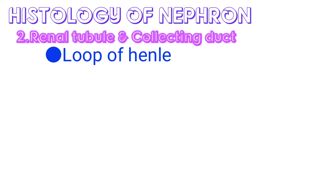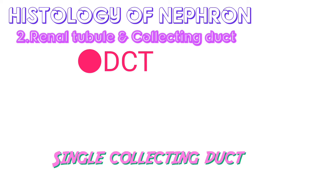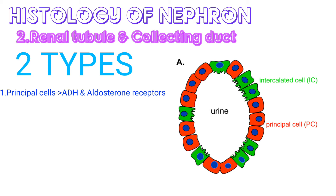The distal portion of the renal tubule is called the distal convoluted tubule, or DCT. Short connecting tubules link the DCT of several nephrons to a single collecting duct. The last part of the DCT and the collecting duct consist of two different types of cells. The majority are principal cells, which have receptors for ADH (anti-diuretic hormone) and aldosterone. The second type, intercalated cells, are present in smaller numbers and their function is to maintain the homeostasis of blood pH.